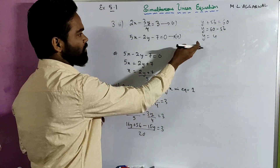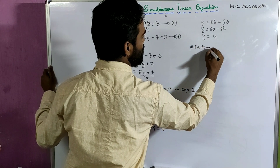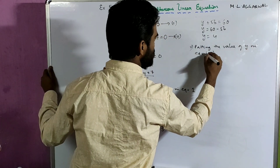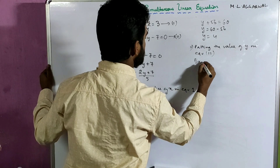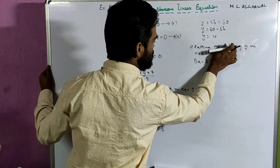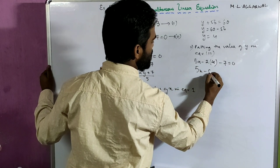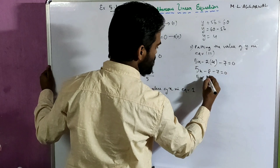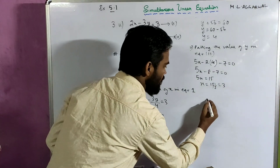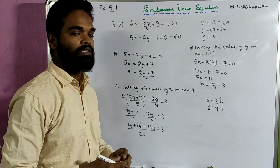Now putting the value of y in equation 2: 5x minus 2 times 4 minus 7 equals to 0, which means 5x minus 8 minus 7 equals to 0, which means 5x minus 15 equals to 0, so x equals to 15 by 5, that is x equals to 3. So x equals to 3 and y equals to 4 is the required solution for this simultaneous linear equation.